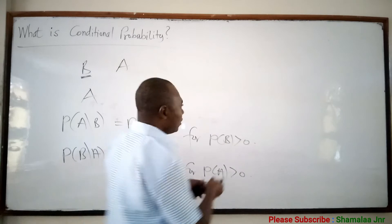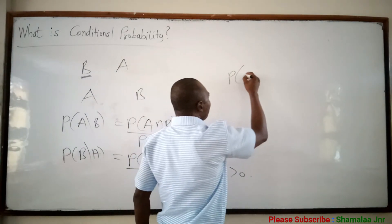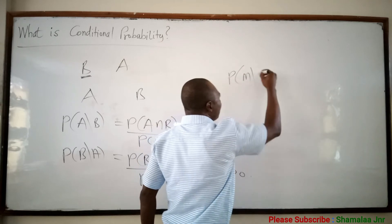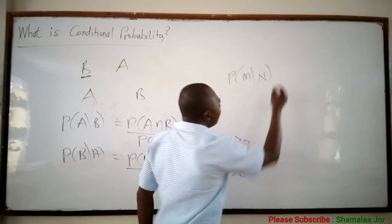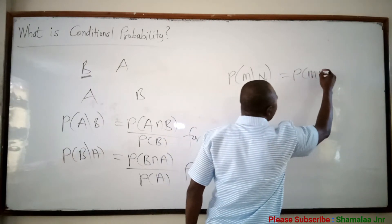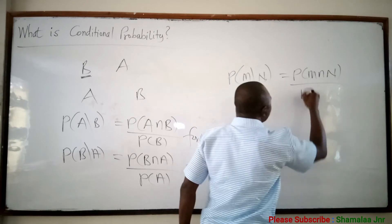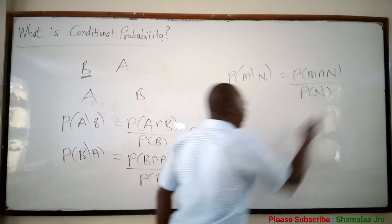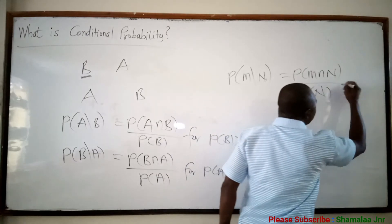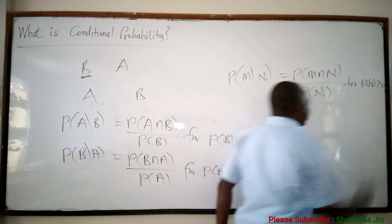So this is conditional probability. If I say the probability of B given M, then we can write P of M intersection N over P of N, where P of N is what has already happened, for P of N greater than zero.